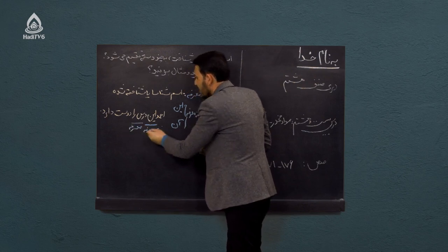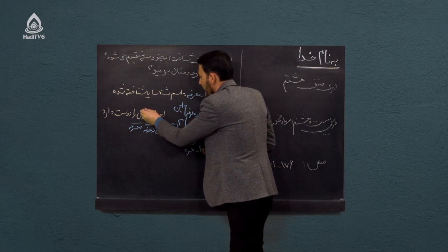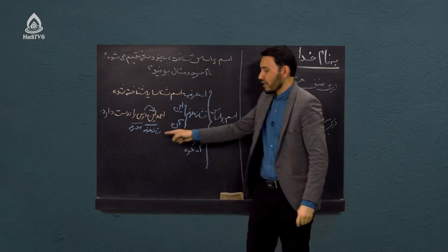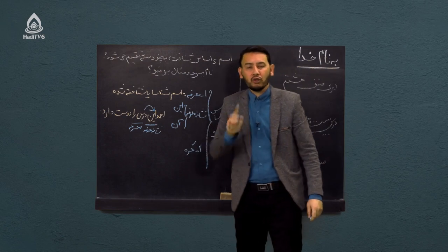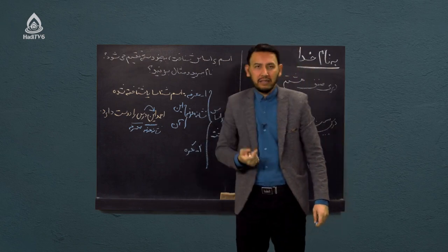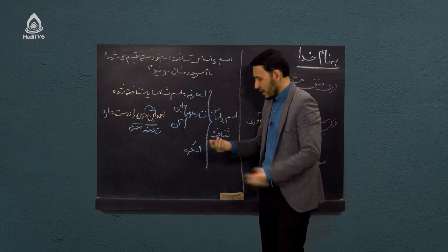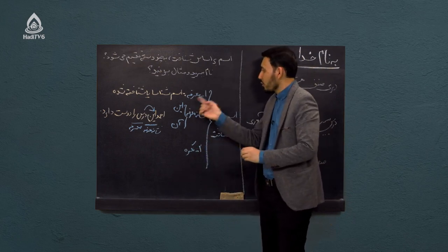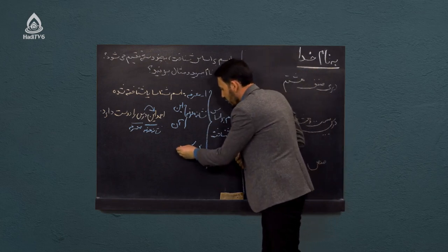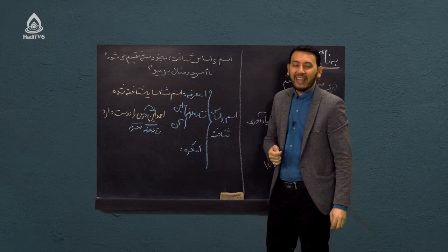پس «درس» اسم معرفه است. چرا اسم معرفه است؟ چون قبلش اسم اشاره «این» آمده که نشانه معرفه است. «این» و «آن» — هر اسمی که بعدشان بیاید می‌شود معرفه. نکره چیست؟ نکره برخلاف معرفه است. اسم معرفه اسمی است که برای مخاطب آشناست، غریبه نیست.